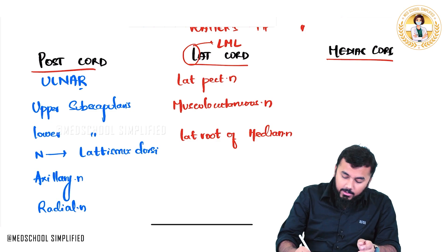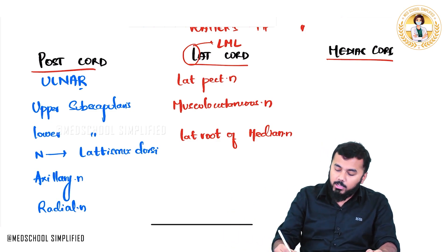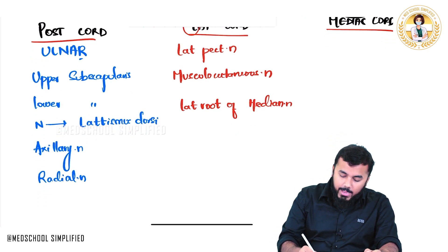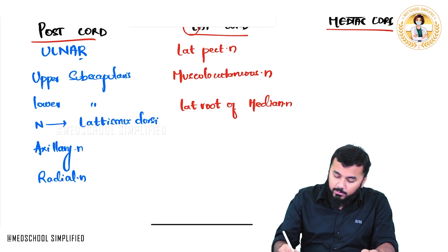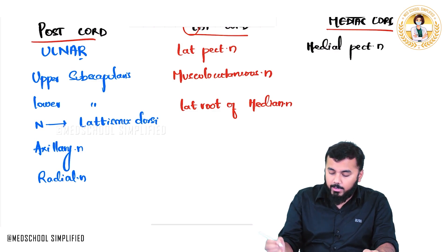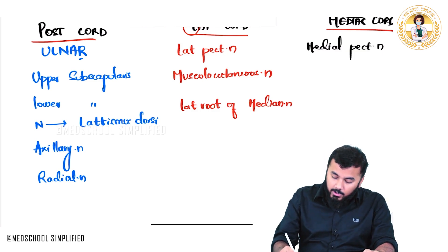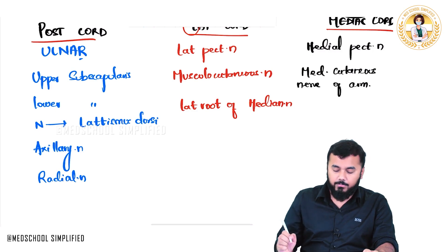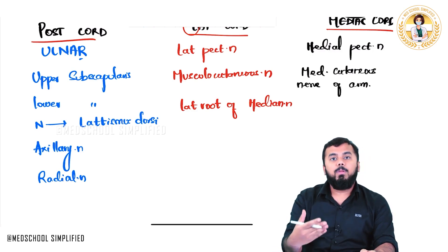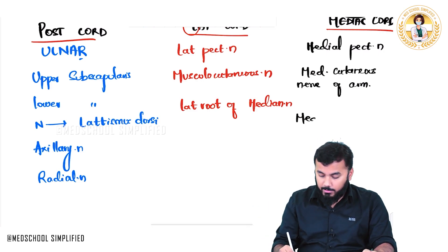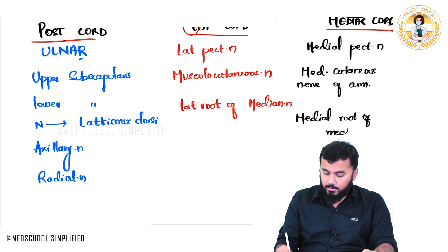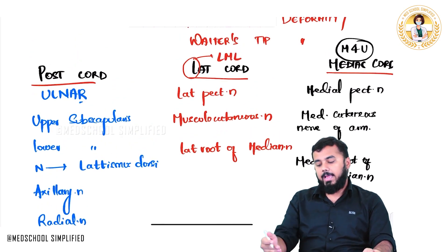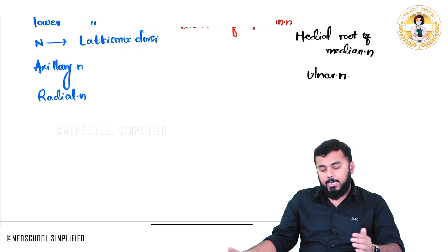For the medial cord, remember M for U: M = medial pectoral nerve, then medial cutaneous nerve of arm (corresponding to musculocutaneous on the lateral side), then medial root of median nerve (corresponding to the lateral root), and finally the ulnar nerve. These are the branches of the medial cord.